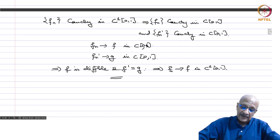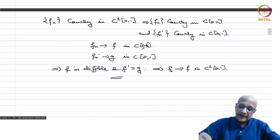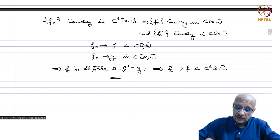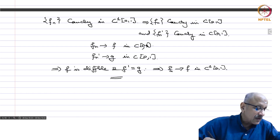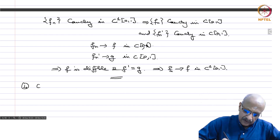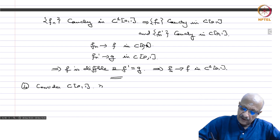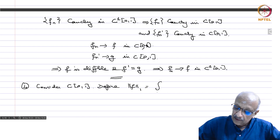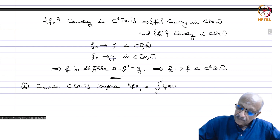We are using the theorem in analysis which says that if the derivative converges uniformly — in fact you need much less for the function — if the function converges at one point and the derivative converges uniformly, then the function itself converges uniformly to a differentiable function whose derivative is the limit. Problem 4: Consider C[0,1] with the norm ‖f‖₁ = ∫₀¹ |f(t)| dt. Show that the space is not complete.